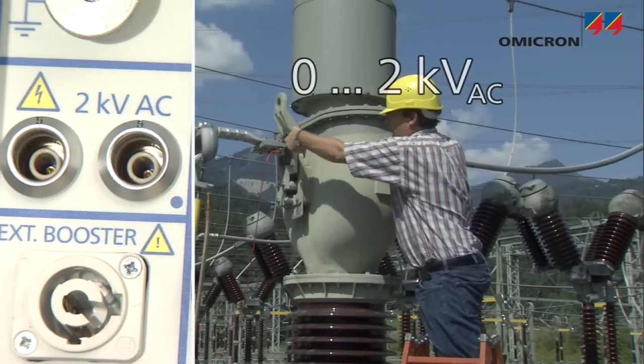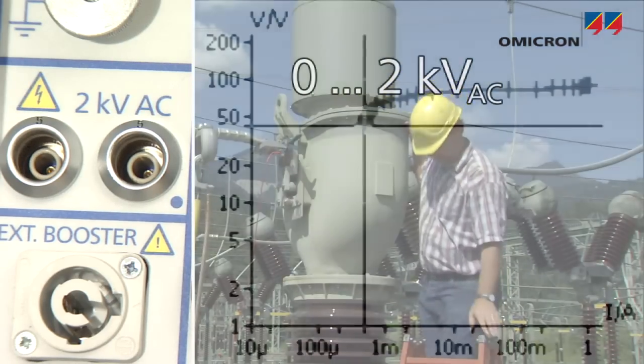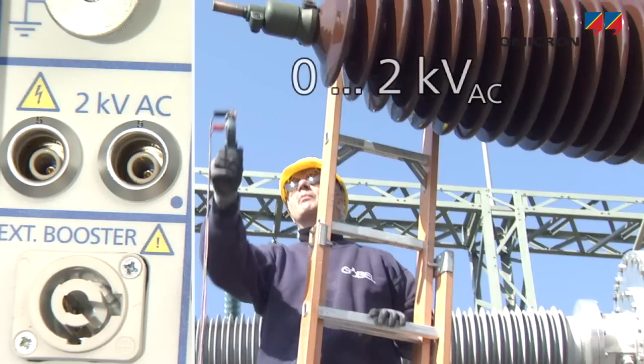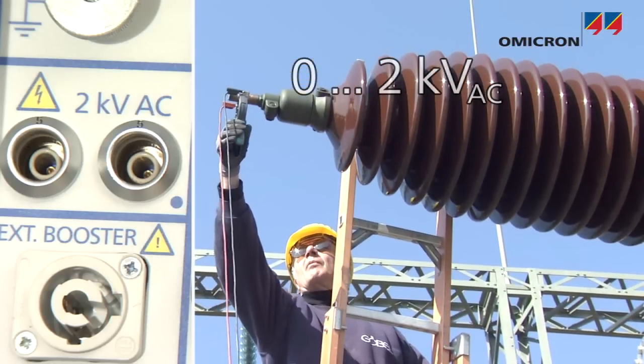Its high voltage output generates up to 2000 volts and is used to record a CT's magnetization curve, test a VT, or perform transformer ratio measurements.